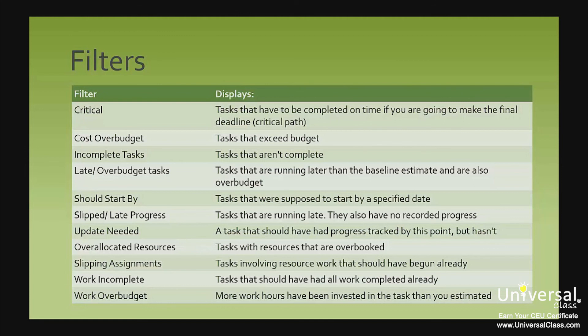The Cost Over Budget filter displays tasks that exceed budget. Incomplete Tasks displays tasks that aren't complete. Late Over Budget Tasks displays tasks running later than the baseline estimate and also over budget. Should Start By displays tasks that were supposed to start by a specified date. Slipped and Late Progress displays tasks running late with no recorded progress. Update Needed shows tasks that should have had progress tracked but haven't. Over Allocated Resources displays tasks with overbooked resources. Slipping Assignments displays tasks involving resource work that should have begun already. Work Incomplete displays tasks that should have had all work completed, and Work Over Budget displays tasks with more hours invested than were estimated.